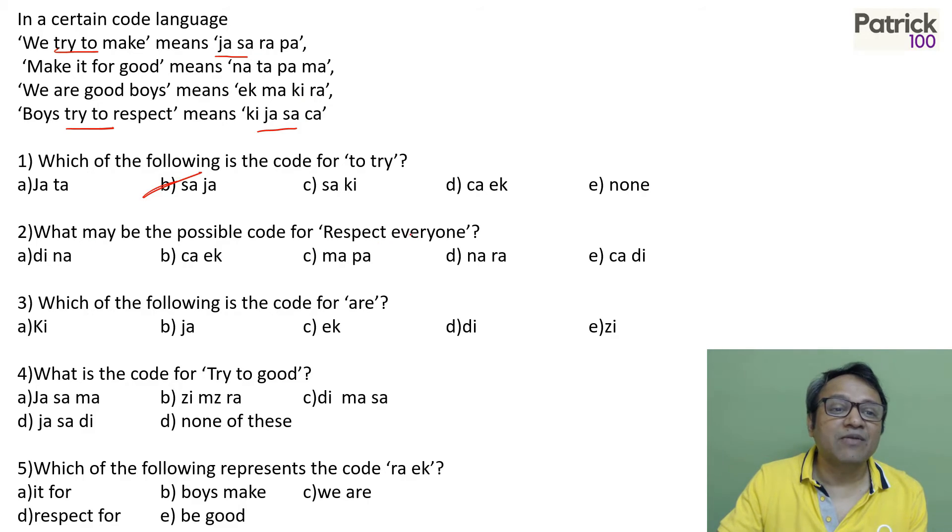What may be the possible code for RESPECT everyone? RESPECT is there in the last. So it has to be CA because BOYS is KI. So RESPECT will be CA. There is nowhere everyone, not there in any of the words. So let's look at CA. Where is CA? CA is there in B and E option.